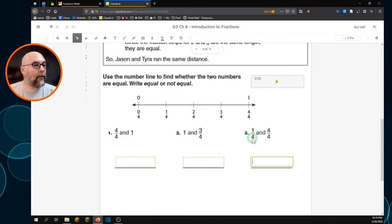So, 1 quarter and 4 quarters, are they equal or not equal? 1 quarter is over here, and I'm going to mark that to make it easier for me to see it. So, this is 1 quarter, and I'm marking it in yellow. And the next one I'm going to mark in blue. 4 quarters. 4 quarters. So, I can tell you that 1 quarter and 4 quarters are not equal.